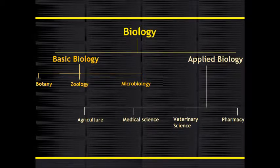And the second one is applied biology. In basic biology, there are three more subcategories: those are botany, zoology, and microbiology. And in applied biology, you have four categories: agriculture, medical science, veterinary science, and pharmacy.